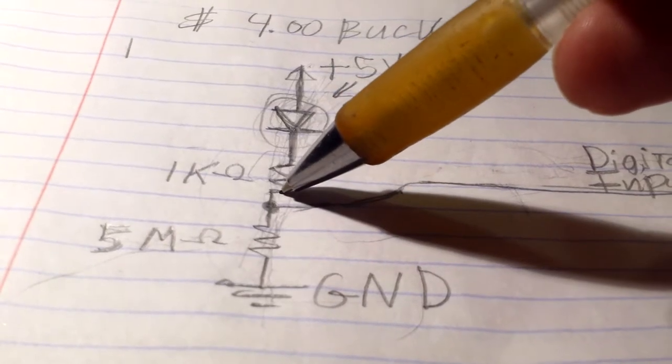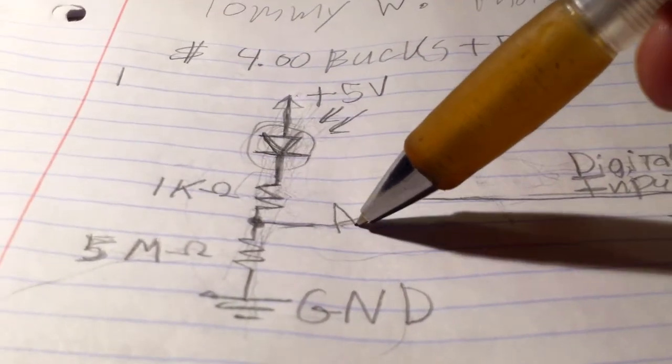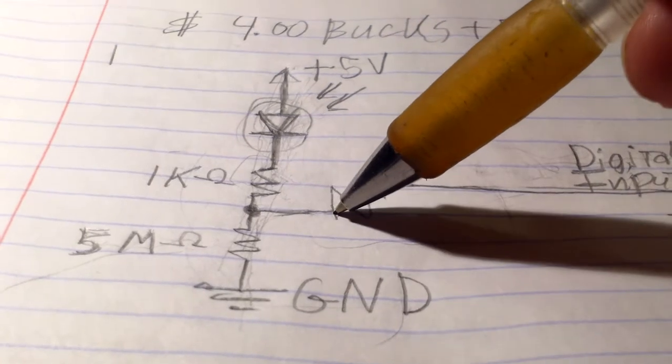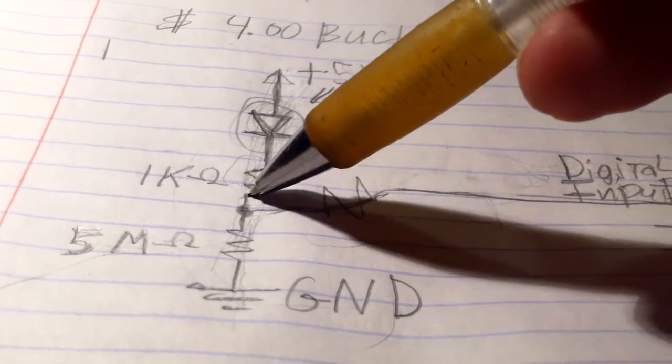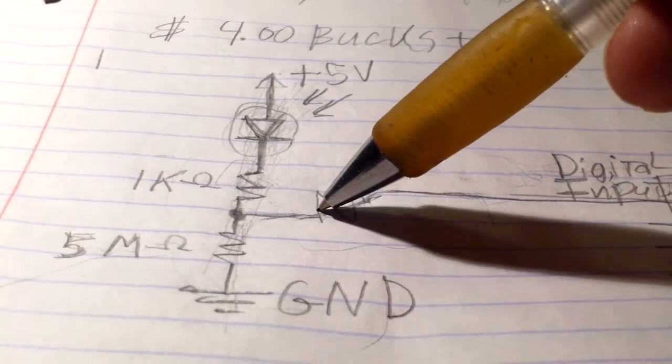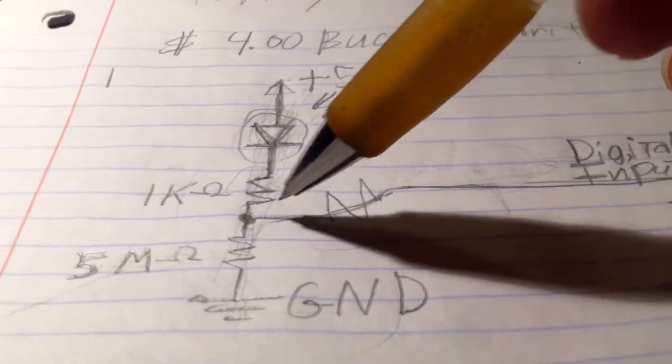So that 1k resistor right here, it'd probably be okay if you put it like right here instead. And just have the photodiode going to this junction right here, which goes to the resistor and then to our digital input.